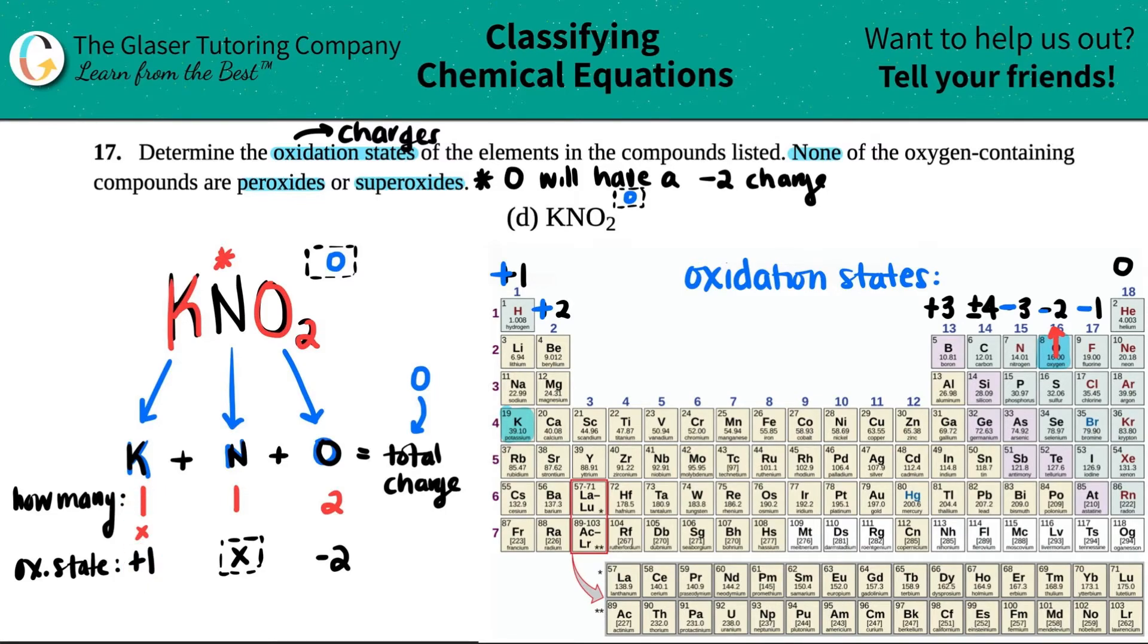You will multiply how many potassiums you have times the oxidation state. So one times a +1 is just a one. For nitrogen, it's one times x, which is x. And then for oxygen, it's two times a -2, so that's a -4.